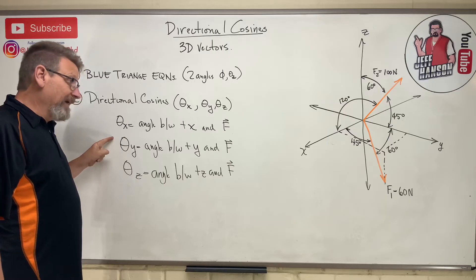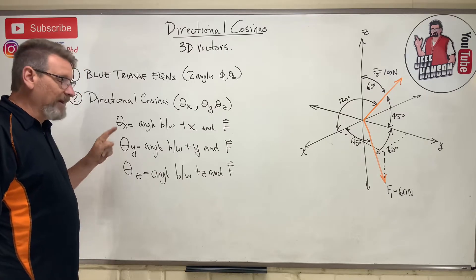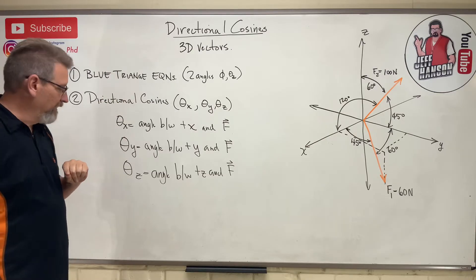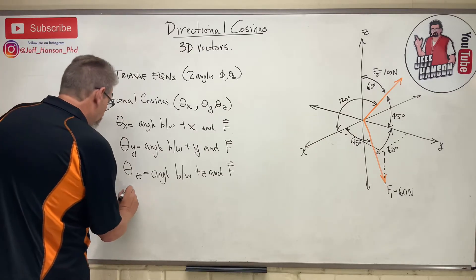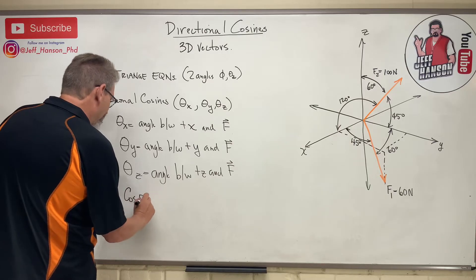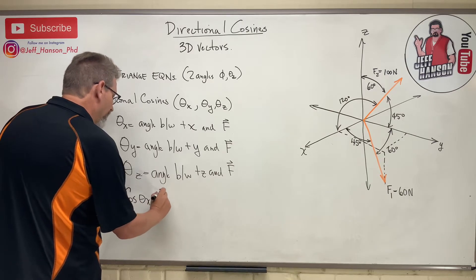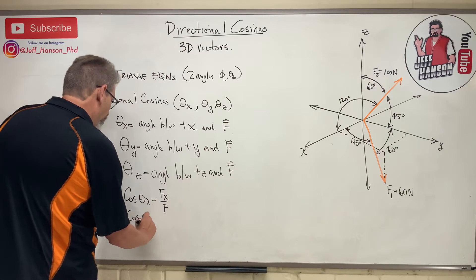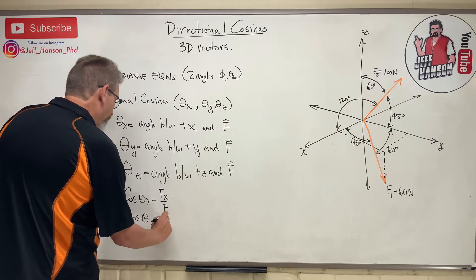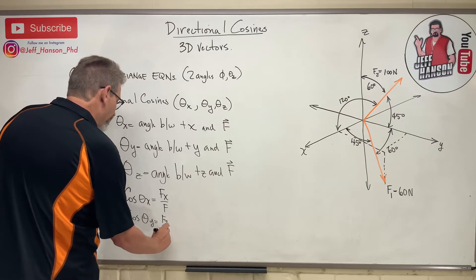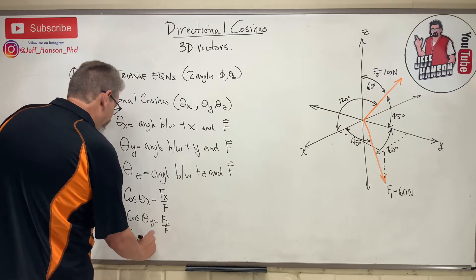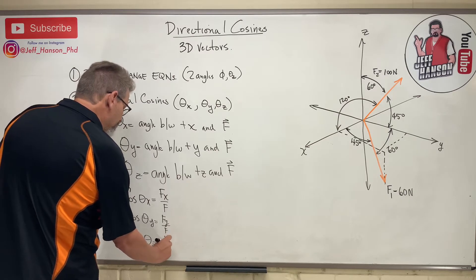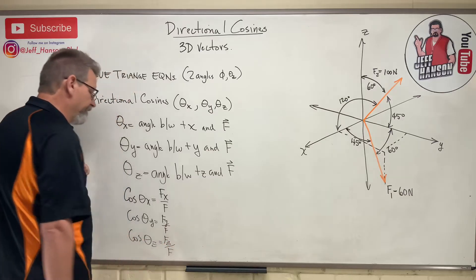So what do I have here? A little bit different method with new equations. The directional cosine equations, guess what? They have cosine in them. Cosine of theta x equals fx over f. Cosine of theta y equals fy over f. And cosine of theta z equals fz over f.